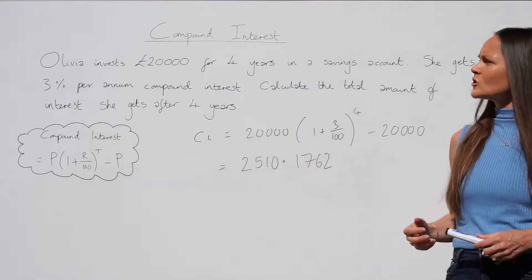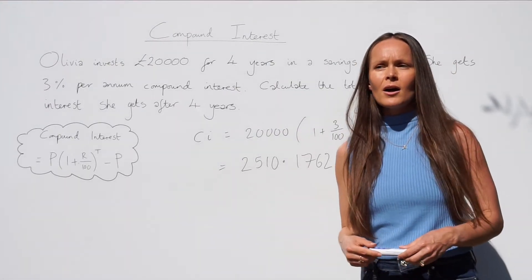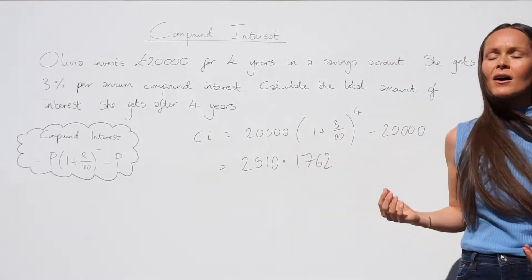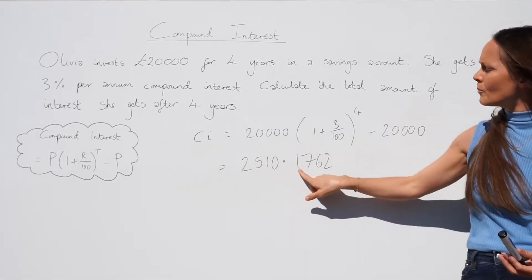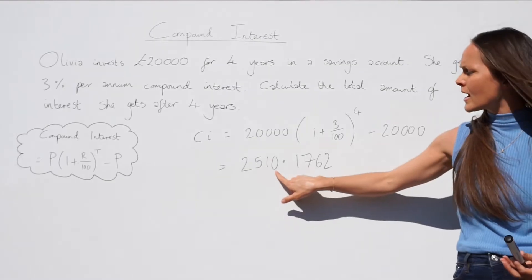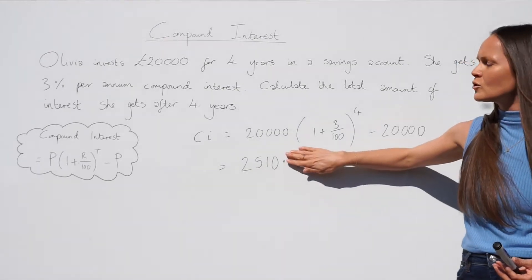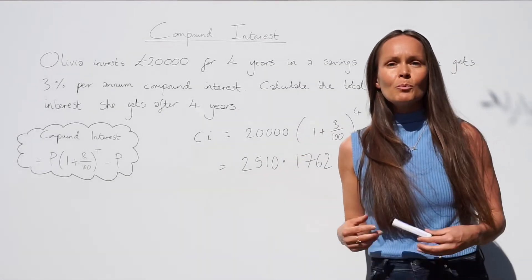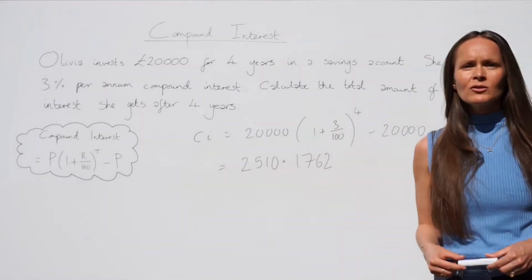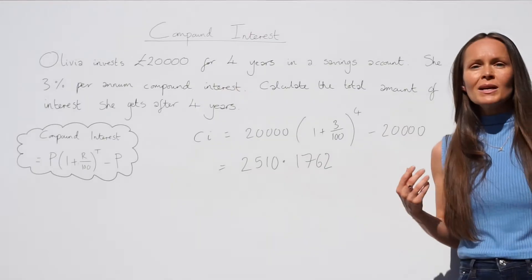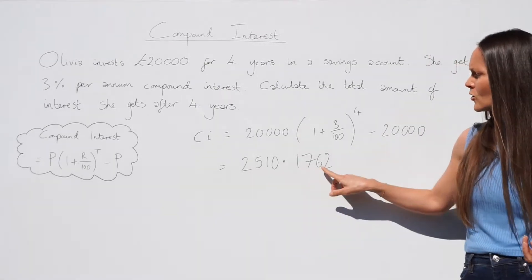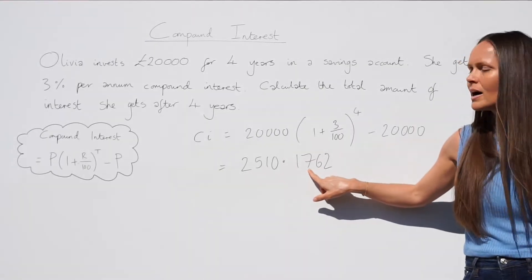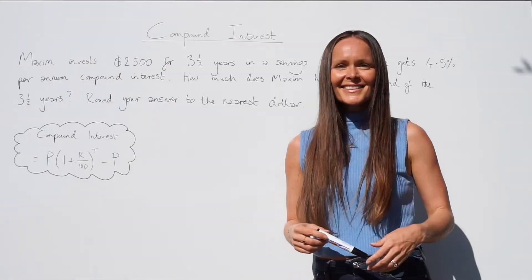However, if the question had said round to the nearest pound, that means no decimal numbers. Because the digit after the decimal point is 1, which is smaller than five, it doesn't round up, so your answer would be £2510. If the question had said round to the nearest pence, that means two decimal places. Because the third digit after the decimal point is 5 or bigger, this number rounds up to 8, giving £2510.18.